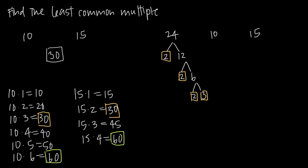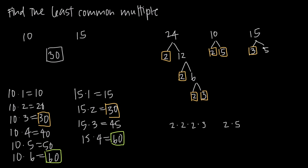So I want to divide 12 by 2 to get 2 and 6. 2 is prime, but 6 isn't, so I need to divide 6 by 2 again to get 2 and 3. So 2, 2, 2, and 3 are all prime numbers, meaning I'm done with my prime factorization of 24: 2 times 2 times 2 times 3. For 10, I divide into 2 and 5 — both prime — giving me 2 times 5. For 15, I divide into 3 and 5 — both prime — giving me 3 times 5.